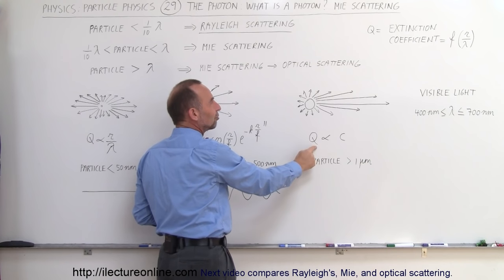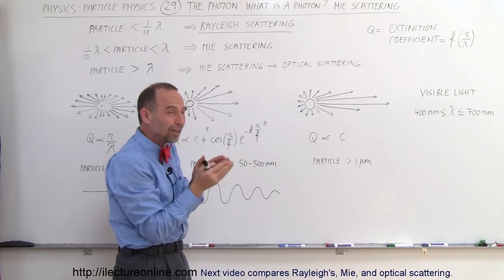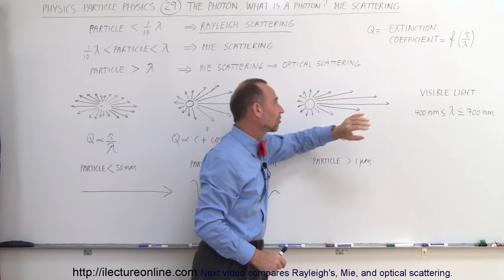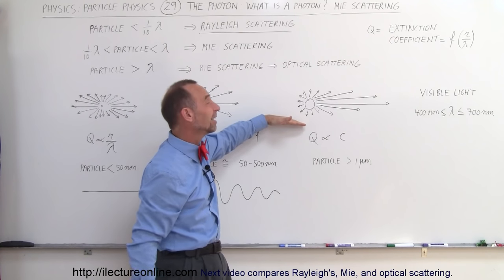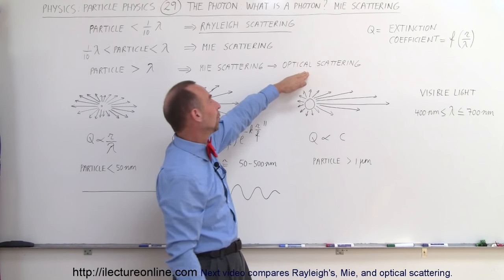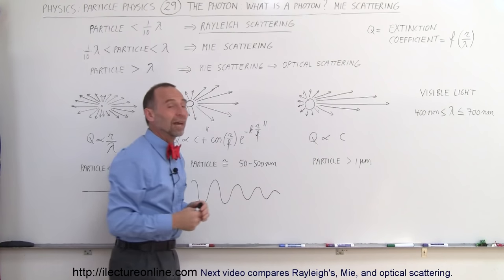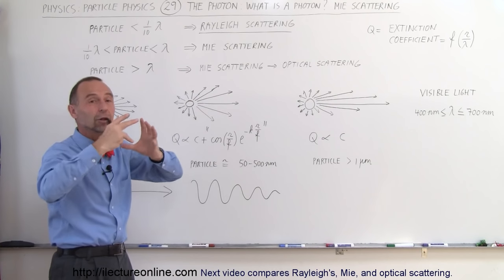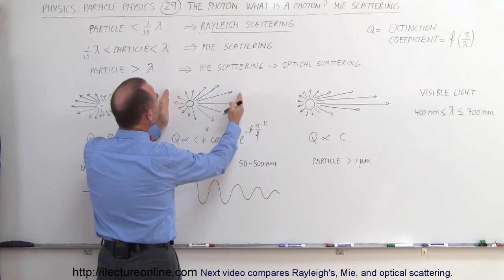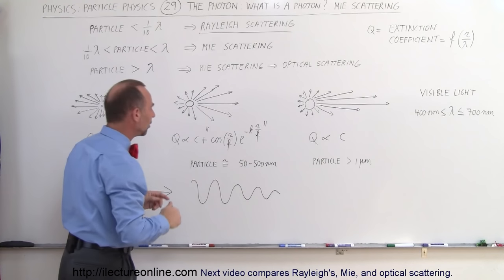At some point, the extinction coefficient becomes a constant. So regardless of the size of the particle relative to the wavelength, the scattering then becomes uniform in direction and proportional to the intensity of the light. We then have what we call optical scattering rather than Mie scattering. So Mie scattering transitions into optical scattering, where the light simply scatters off a large particle.